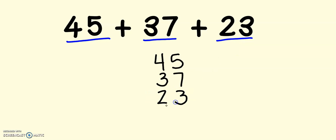45, 37, and 23. Now since I have 3 numbers, sometimes we want to put 2 plus signs. We do not need 2 plus signs. No matter how many numbers we add, we only need to put 1 plus sign at the bottom by the last number to show that we are adding.